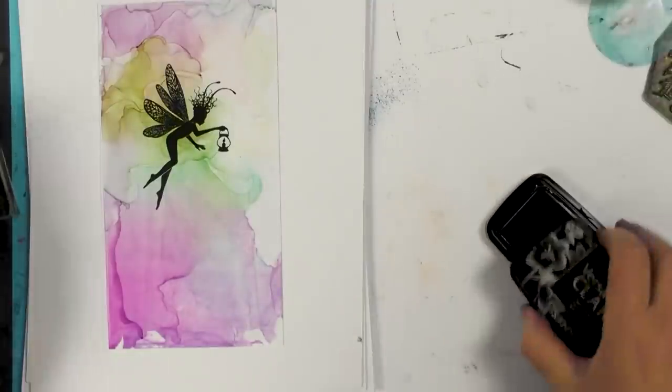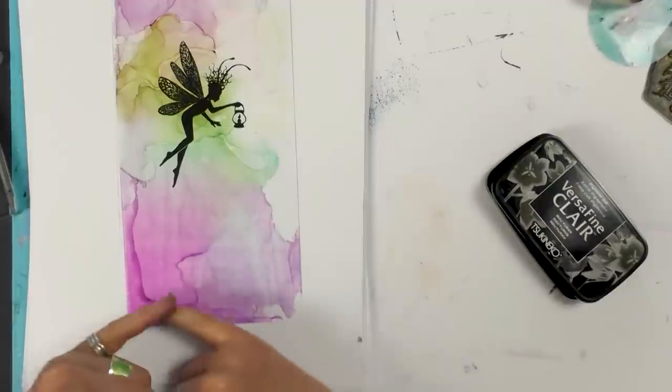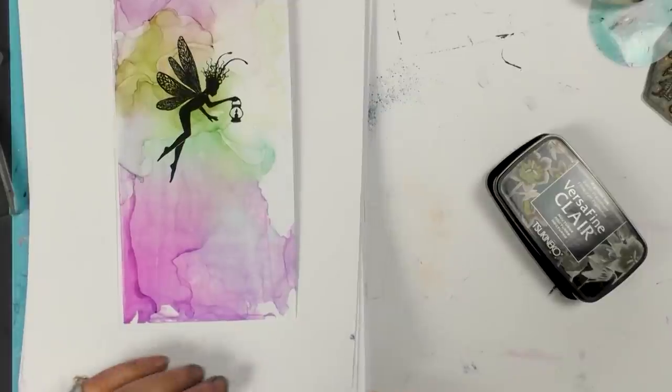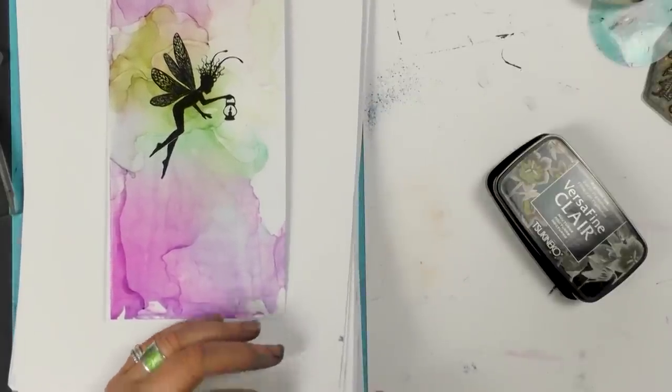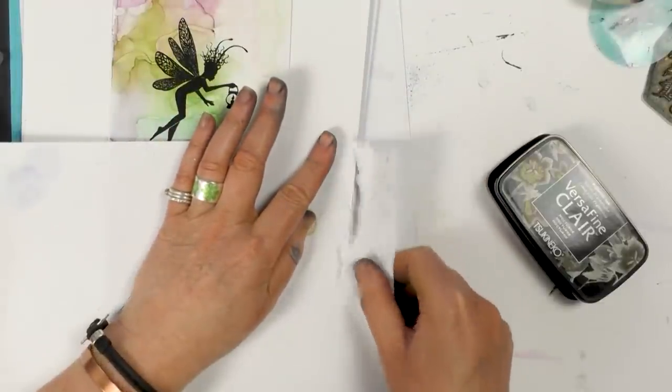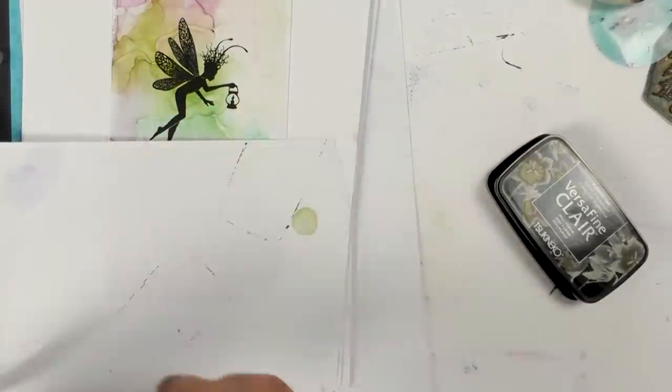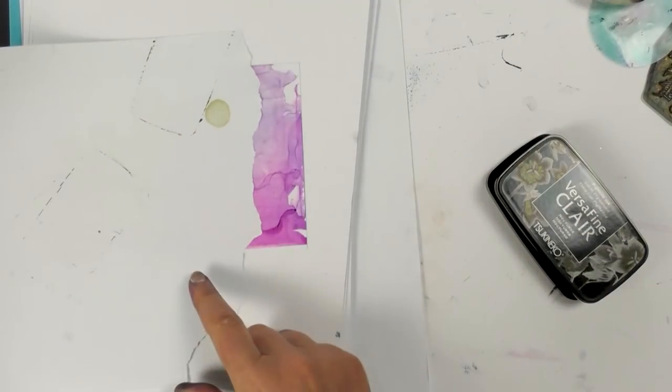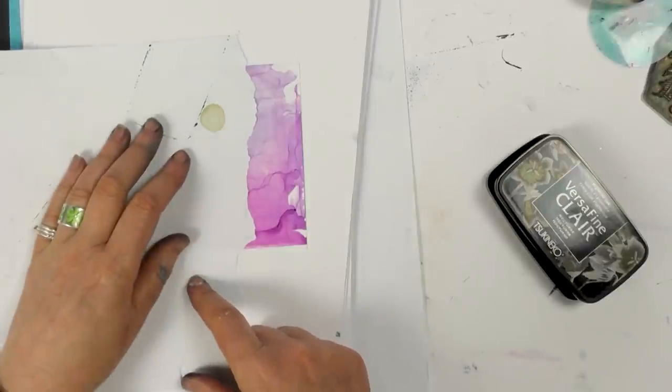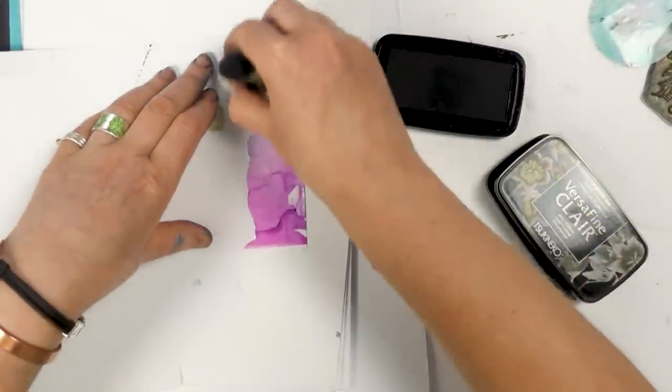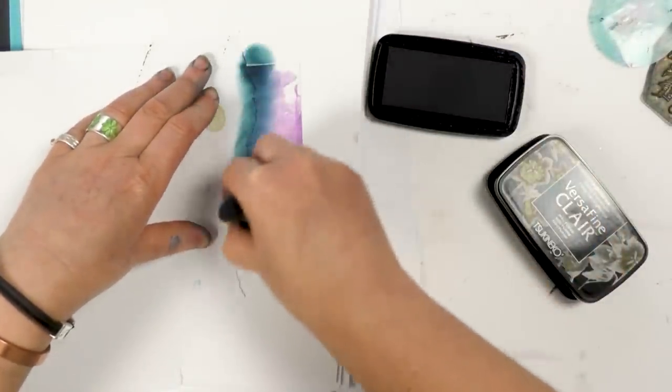Okay, so we're going to have some little flowers down the bottom here, so I need a piece of paper to tear. And then just pop that down. And then using the twilight I'm going to just take that over the top.